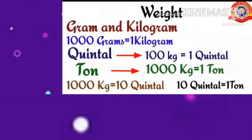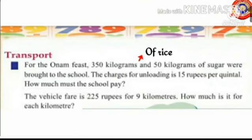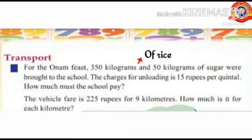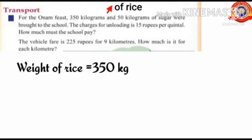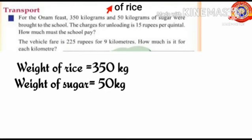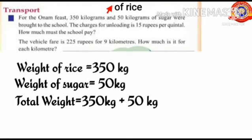Let's discuss a problem based on weight. For the autumn feast, 350 kilograms of rice and 50 kilograms of sugar were bought to the school. The charges for unloading are 15 rupees per quindle. How much must the school pay? Total weight equals 350 plus 50, which is 400 kilograms. We know that 100 kilograms make one quindle, so 400 kilograms make four quindles.